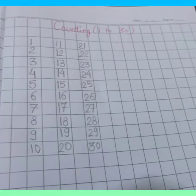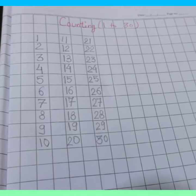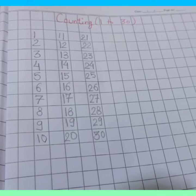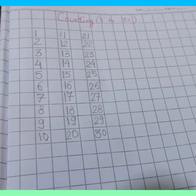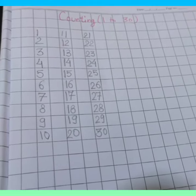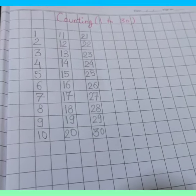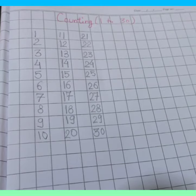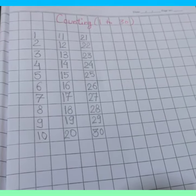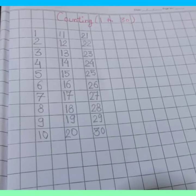These are the counting from 1 to 30. Today we learned how to write counting in your copy 1 to 30. Now tomorrow we will learn how to write counting 31 to 60 in your copy. Okay, bye. Have a good day.